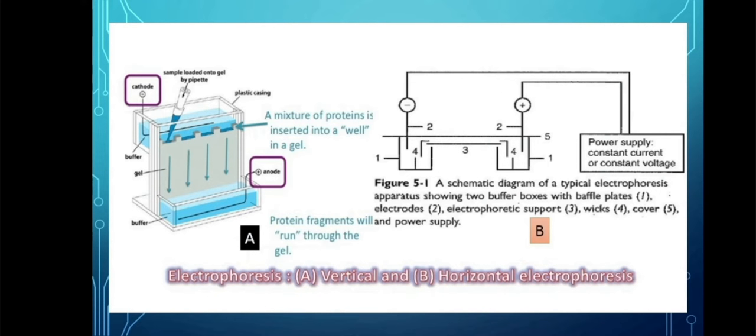The picture on your right shows horizontal electrophoresis. Why horizontal? Because the position of the cathode and anode is adjacent to one another, so the movement is horizontal. That is a schematic diagram of a typical electrophoresis apparatus showing two buffer boxes with buffer plates labeled as number one, the electrophoretic support labeled as two, number three the wicks, and fifth the power supply.